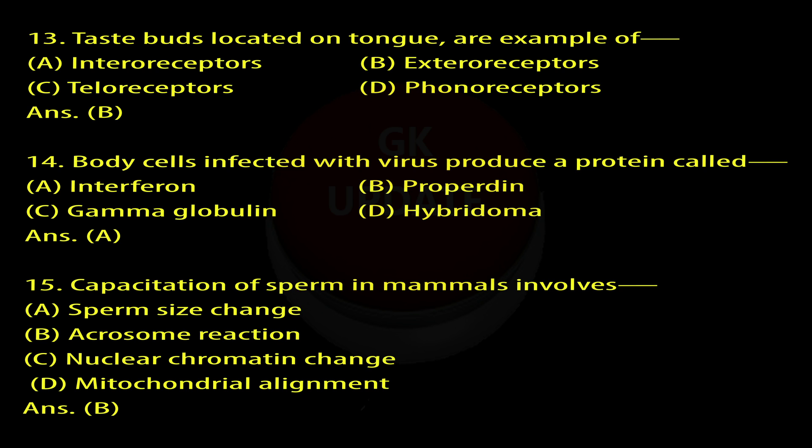Question 15: Capacitation of sperm in mammals involves — A. Sperm size change, B. Acrosome reaction, C. Nuclear chromatin change, D. Mitochondrial alignment. Answer: B.